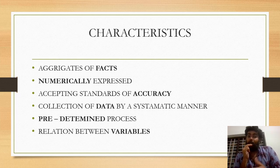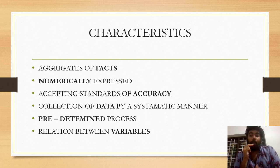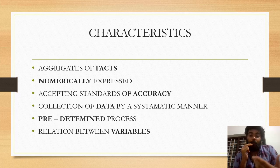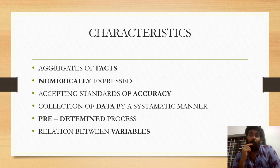Second characteristic: Numerically expressed. Third characteristic: Accepting standard of accuracy — accuracy is critical. Fourth characteristic: Collection of data by systematic manner — information is collected in a systematic manner. Fifth characteristic: Predetermined purpose — statistics are used in a specific format.